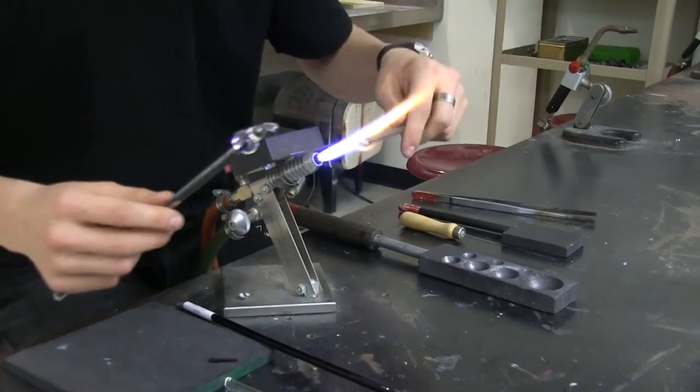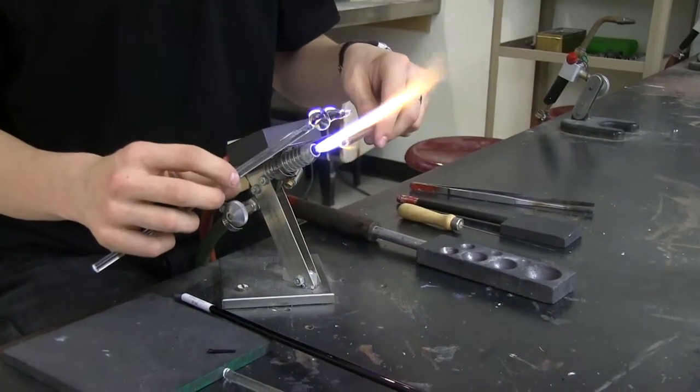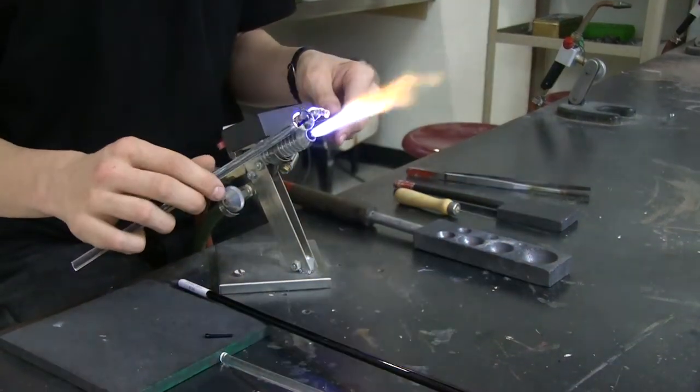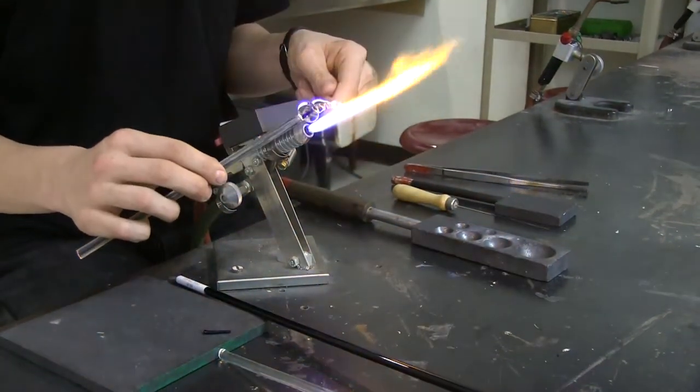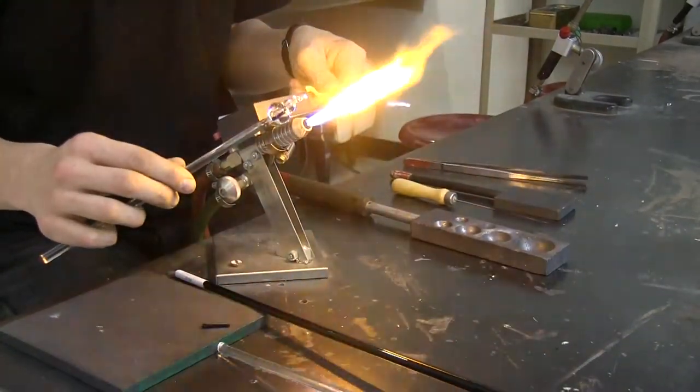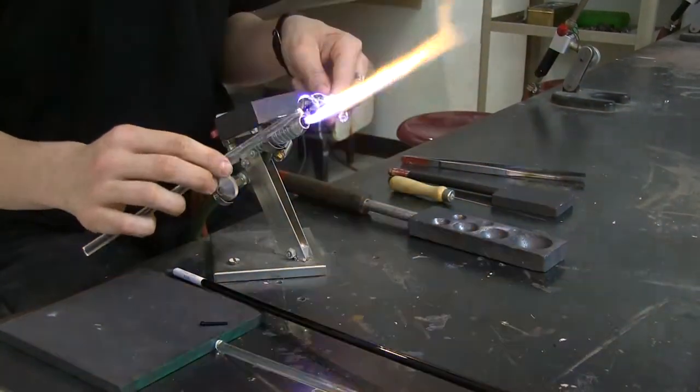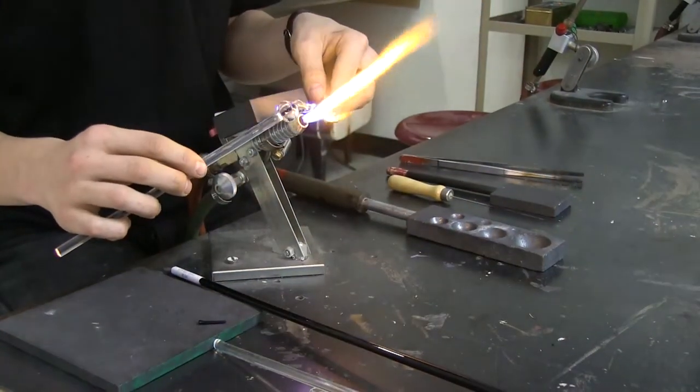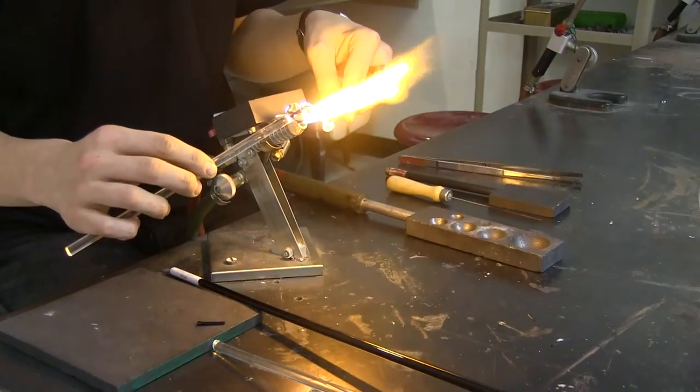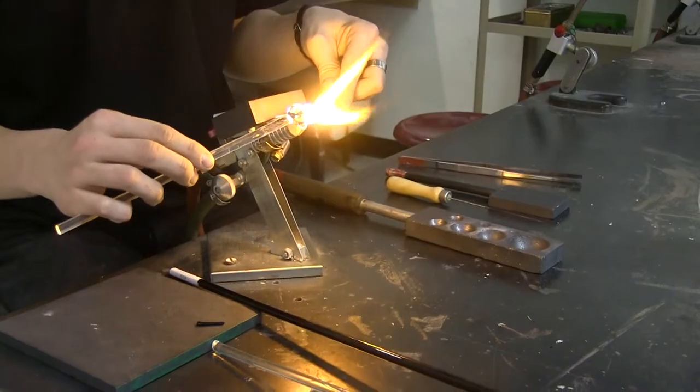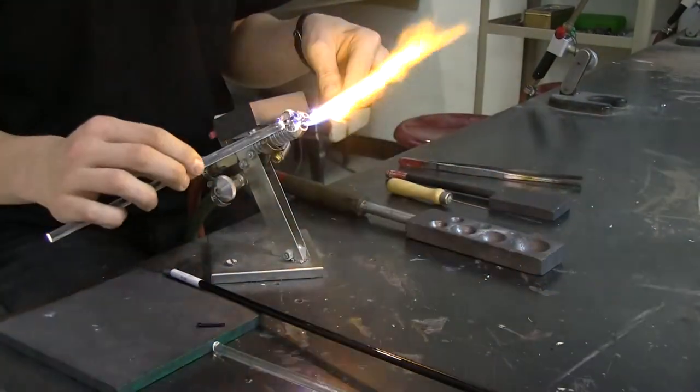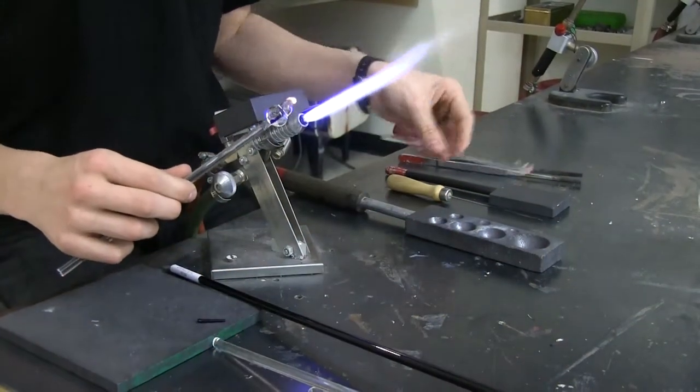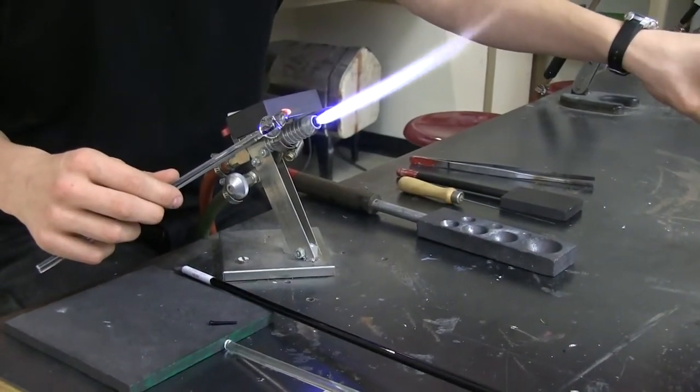So now that we have this rod, what we can do is we can heat that up, and when it gets warm, or hot enough, we can just tap and pull it right off. And if it makes a stringer, just burn that stringer right off. I'm just going to pull it right off. Little bits, just little bits at a time. Don't get too big of a glob. Just get rid of the end here.